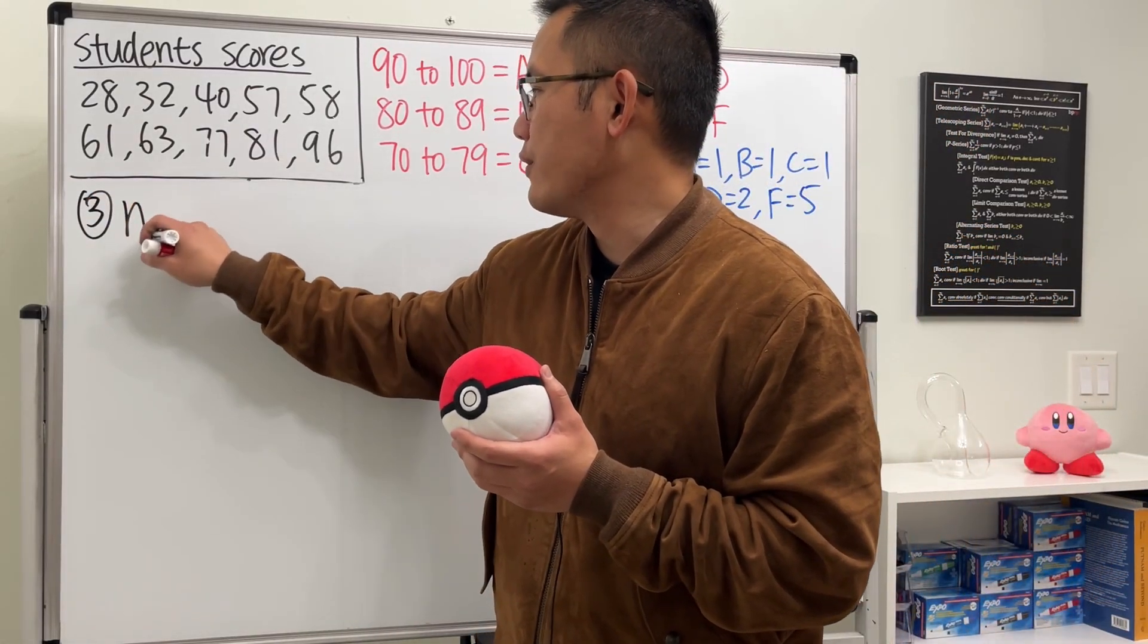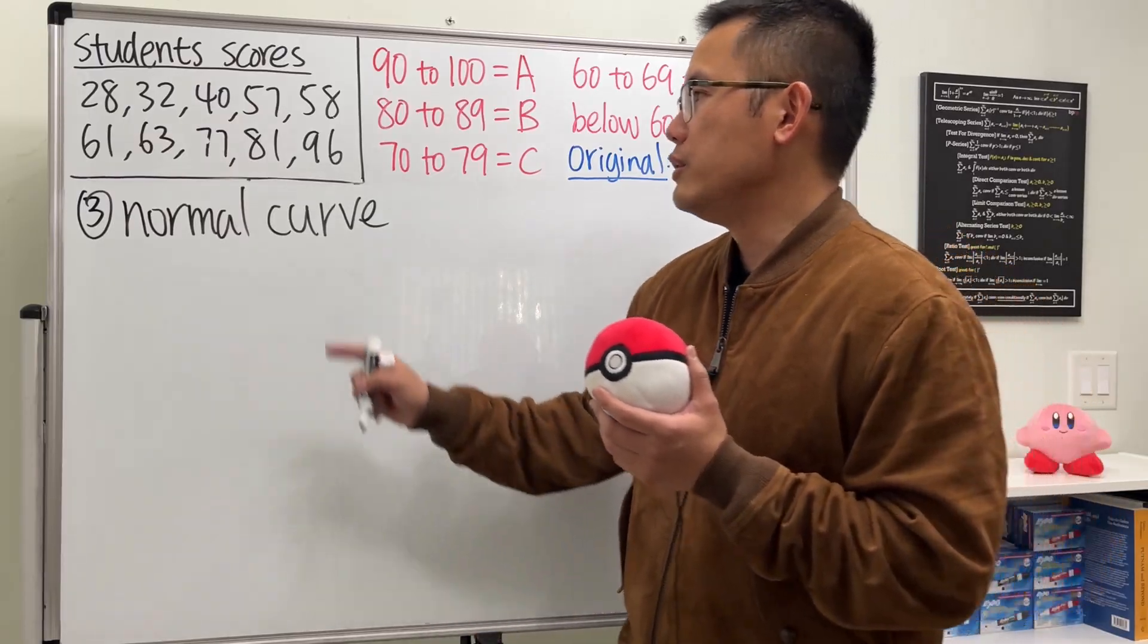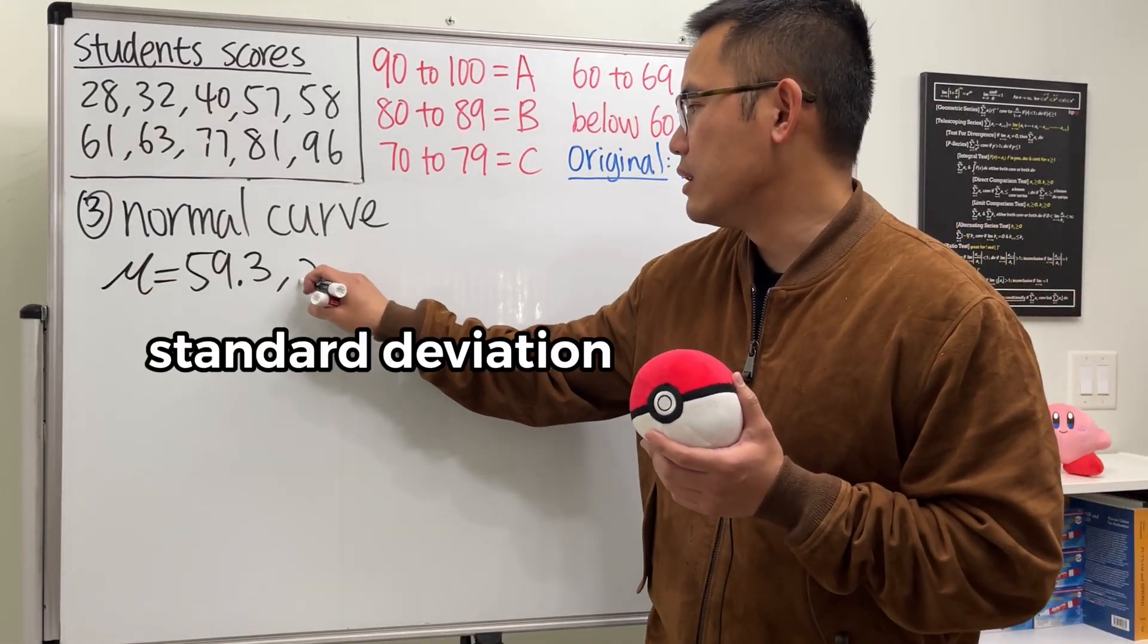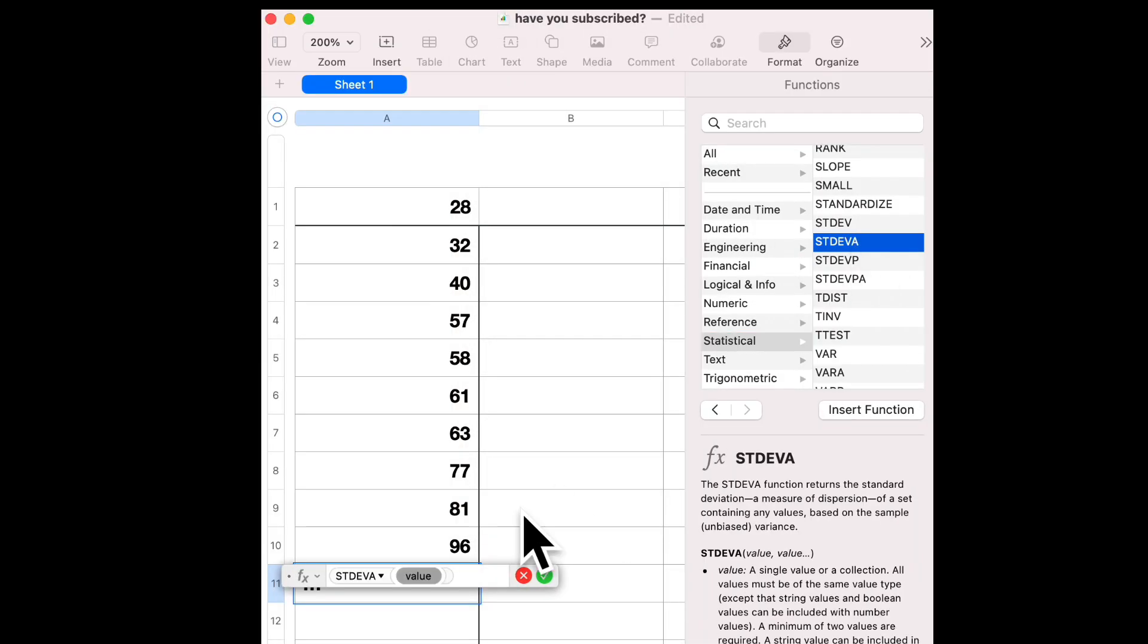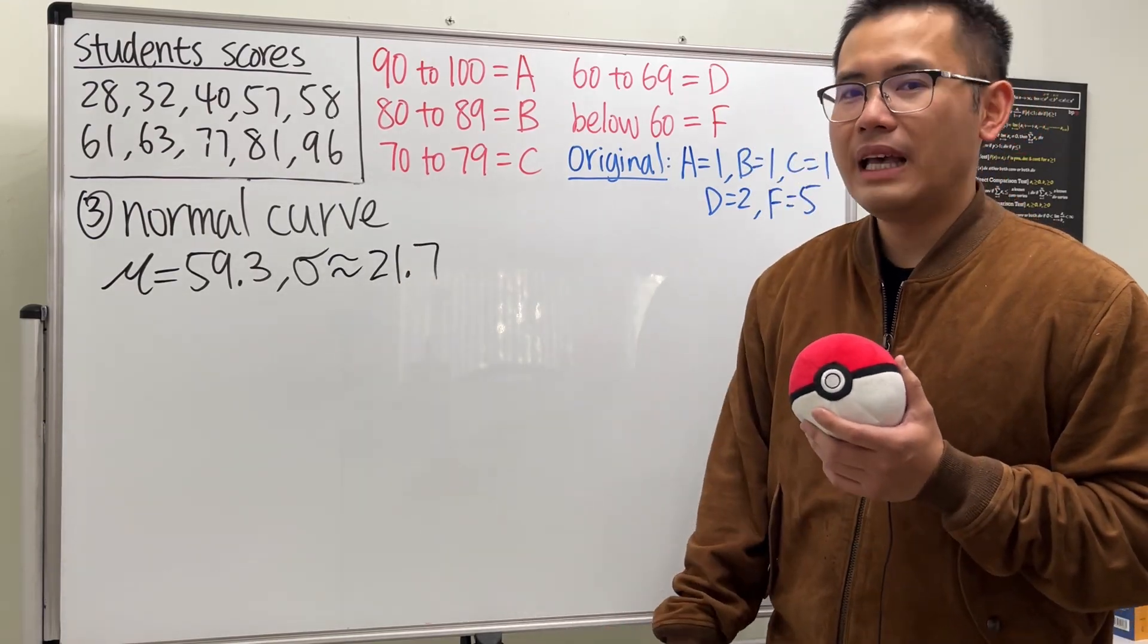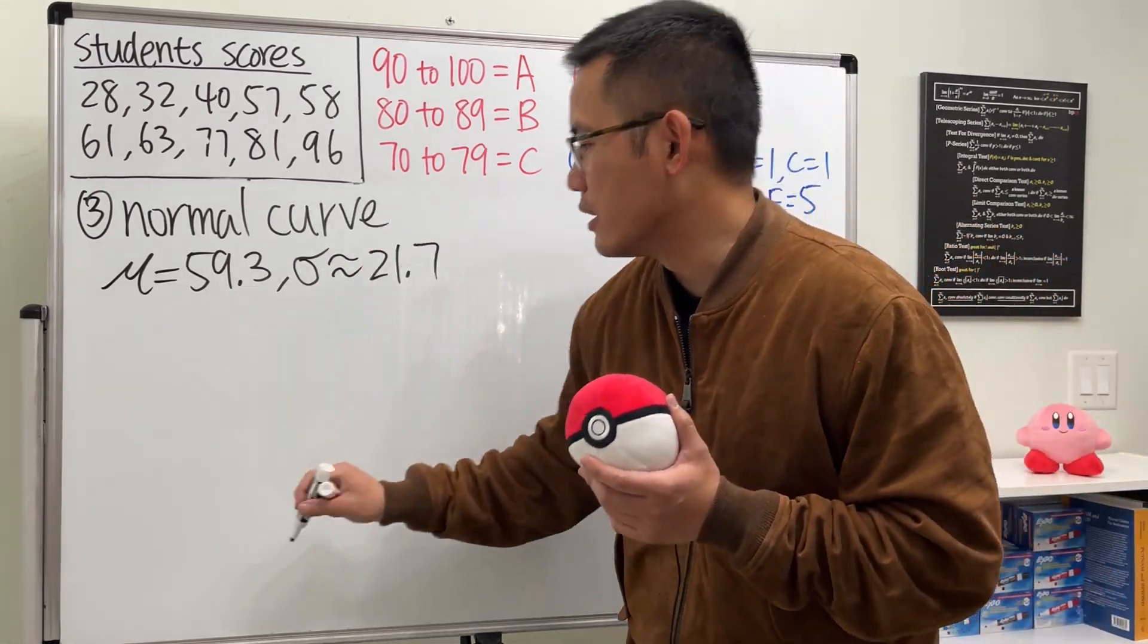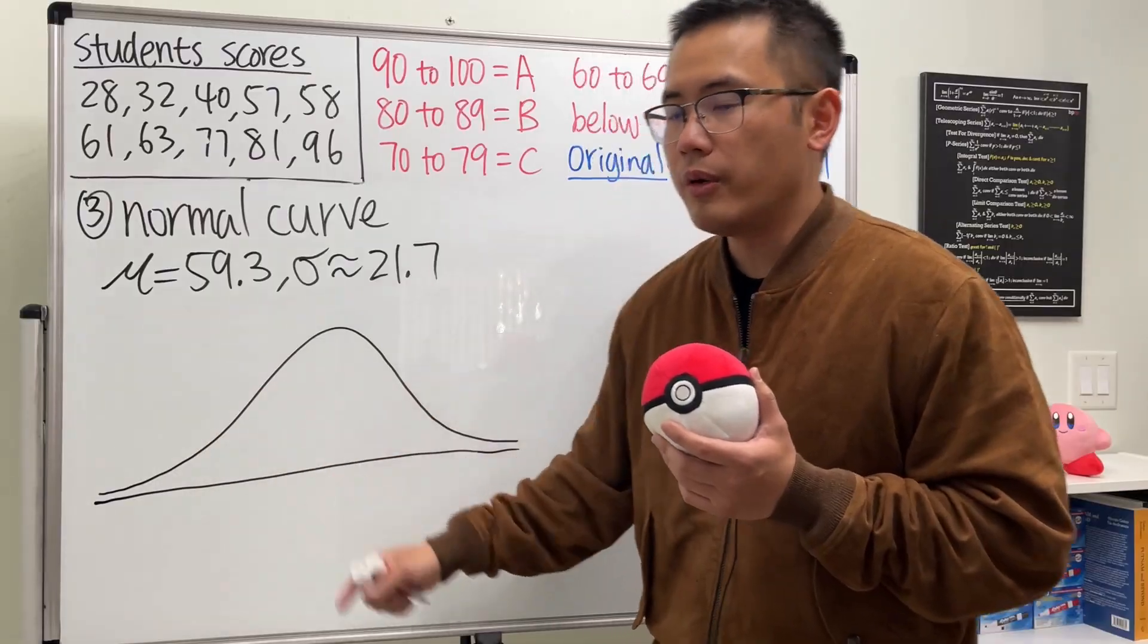So for the third way, let me write that down right here for you guys. In order to do this, we need two important statistical values. The first one is the mean, which is just the average. We add everything and divide it by 10 in our case. And the notation for that is mu. And I have computed for you guys already. This is 59.3. And the other thing that we need is called the standard deviation, denoted by this sigma here. The best way to compute this is you enter everything onto a spreadsheet and use their building function to compute the standard deviation. And you will get approximately 21.7.